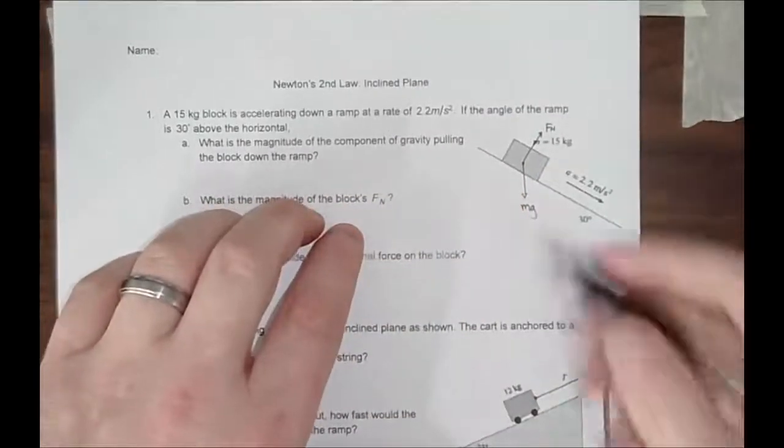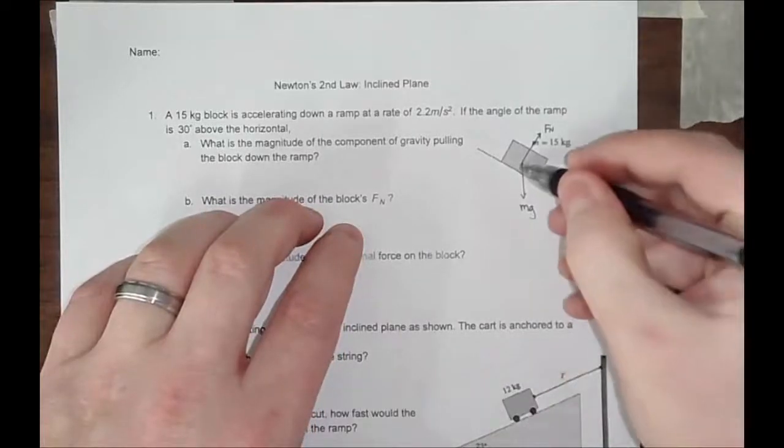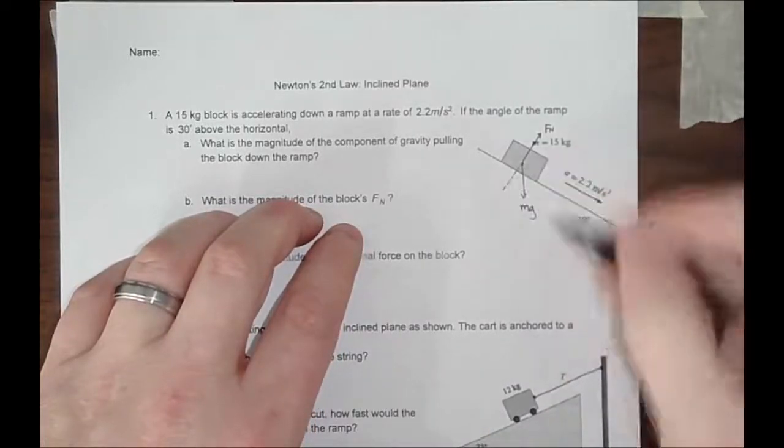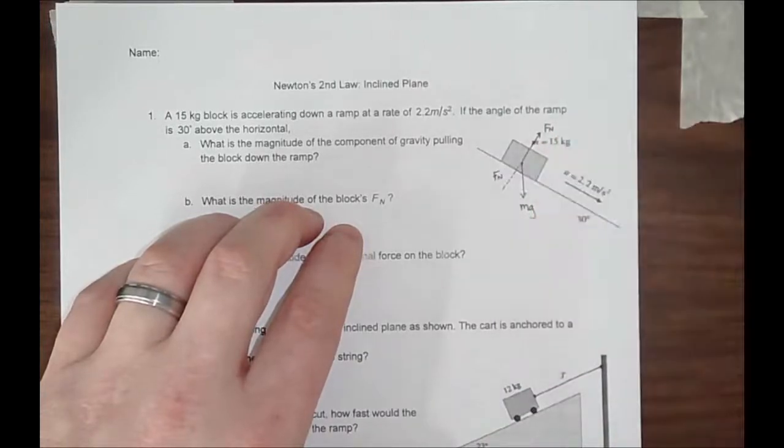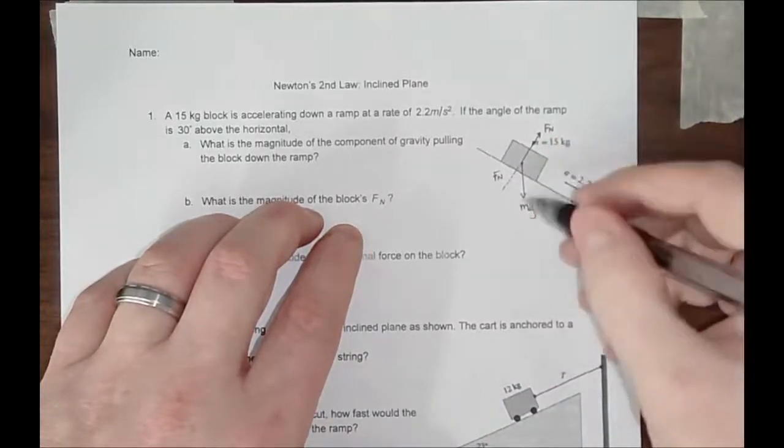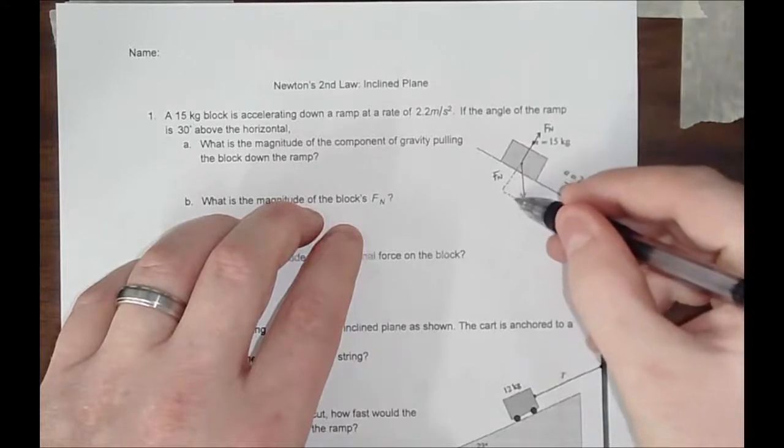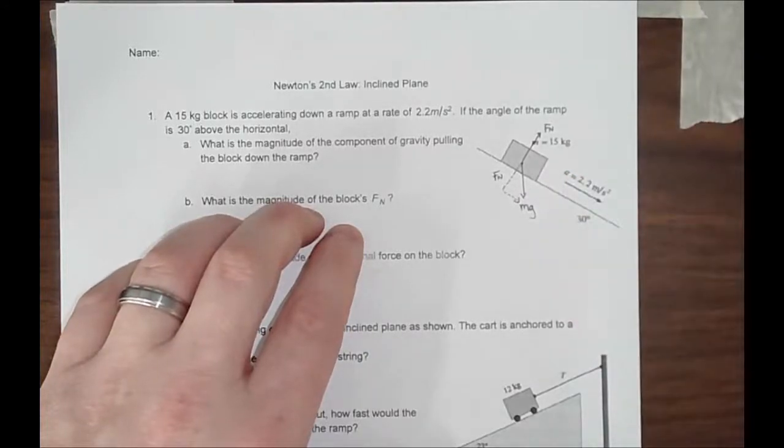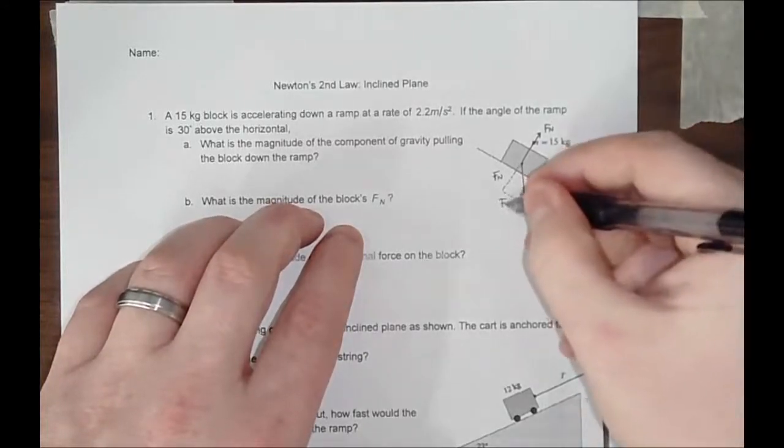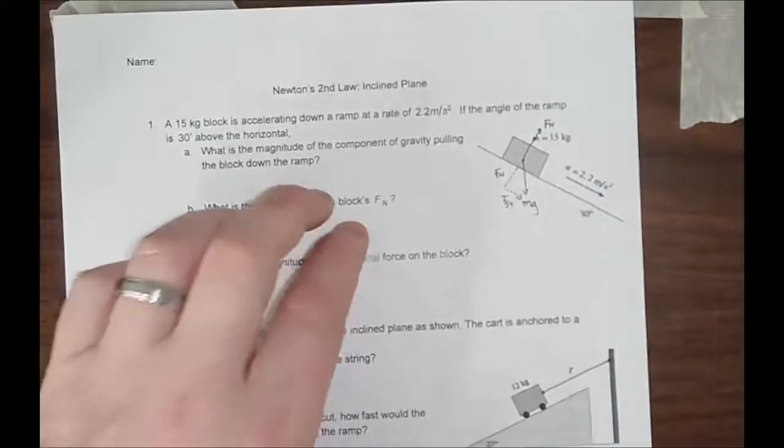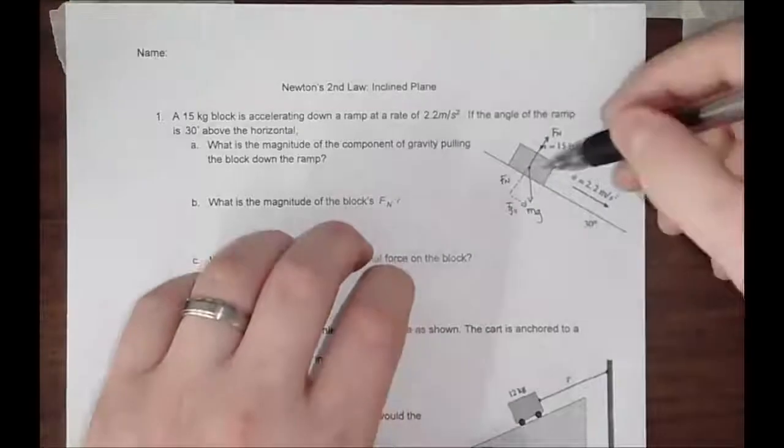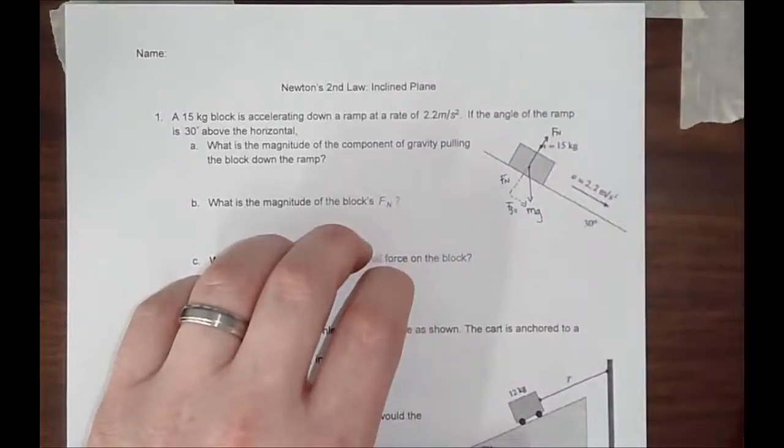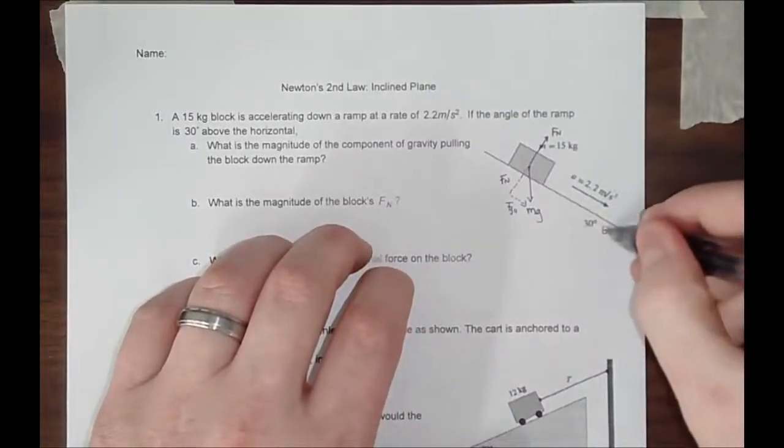How you find this is using some trigonometry. If we draw a dotted line right here on the back side, this dotted line is also equal to our normal force. There is some component right here pulling the object down the ramp. We'll call that FG parallel. If this angle theta is 30, then this angle right here has to be 30 as well.